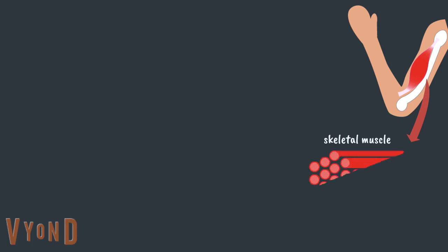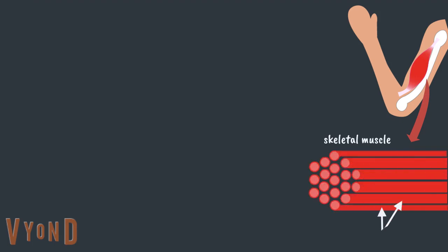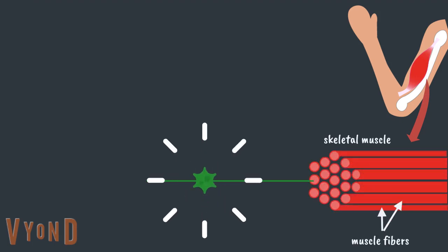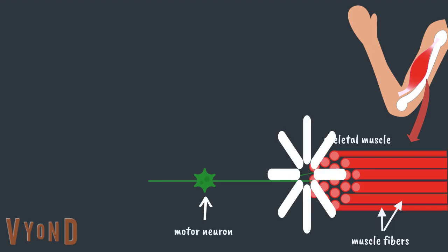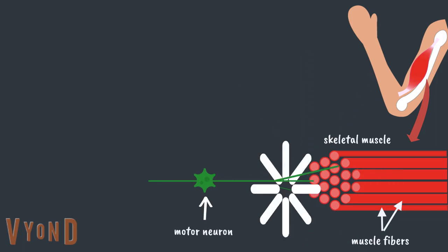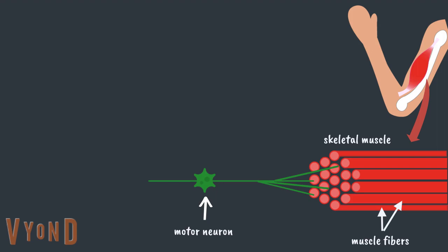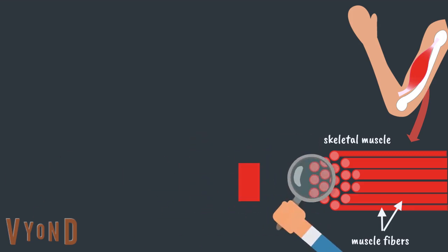Each skeletal muscle is made up of hundreds of muscle cells called muscle fibers. Each muscle fiber is connected to only one nerve cell called a motor neuron. However, one motor neuron is connected to multiple muscle fibers. The motor neuron, along with the muscle fibers it is attached to, is called a motor unit.